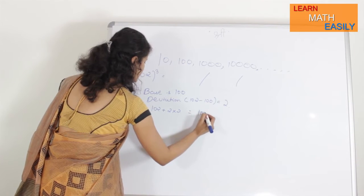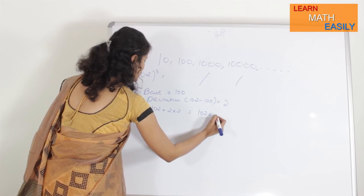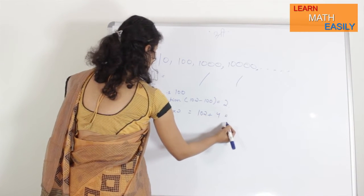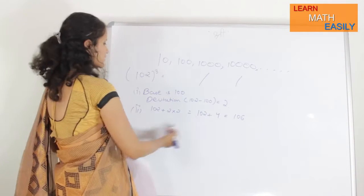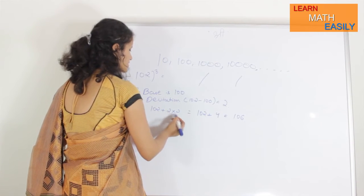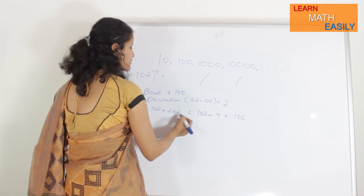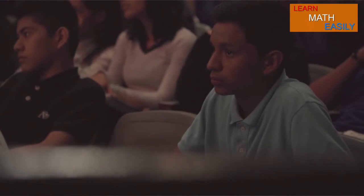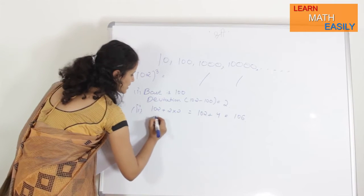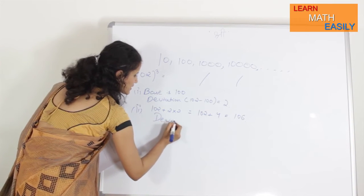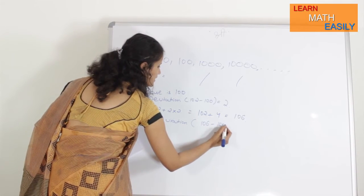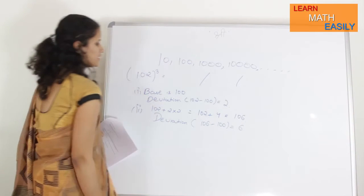So, I will get 102 plus 4 that is equal to 106. Here, what you are doing is, you are adding 102 plus 2 times its deviation, that is 102 plus 4 that is equal to 106. Now, with this number, we will take another deviation, that is 106 minus 100, that is equal to 6.